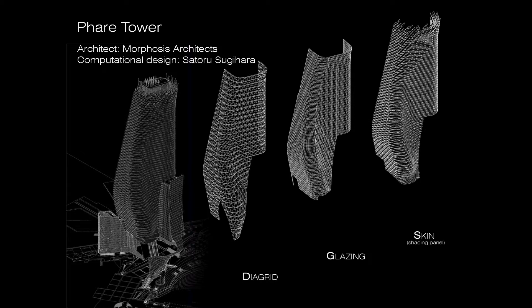I used to be a computational designer at Morphosis Architects in Los Angeles, and one of the projects I worked on is a Fair Tower — a skyscraper project in Paris. I worked on three areas: the diagrid structure, the glazing panelization, and the solar shading skin installed outside of the glazing. The skin was a stainless steel mesh.